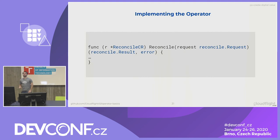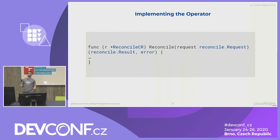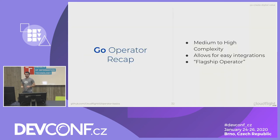One thing I want to point out: when you bootstrap a Go operator, you'll be left with a main Reconcile function — this is the main entry point for your operator. If you just ignore any other code and put your custom code in there, you should be ready to go. This function gets called every time your resource changes or updates, and this is where you perform your custom logic. To recap the Go operator: it's for medium to high complexity applications, allows easy integration with external services, and it's the flagship operator type — most operators are written in Go.